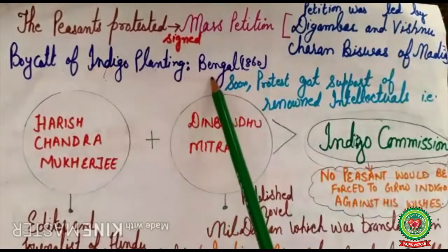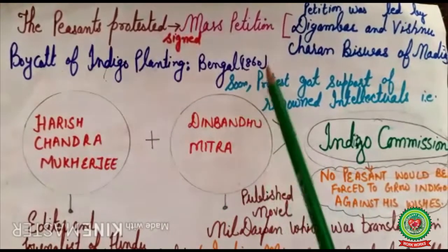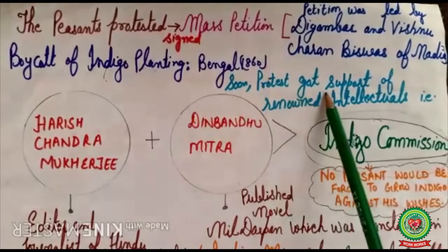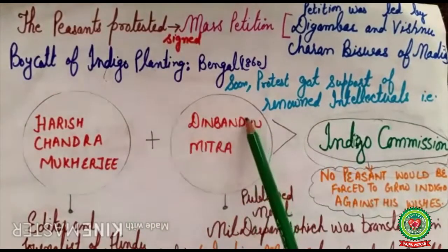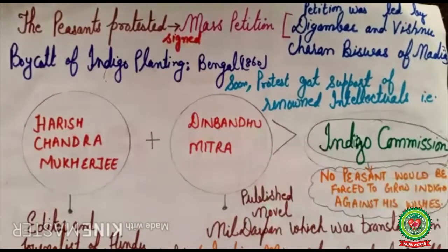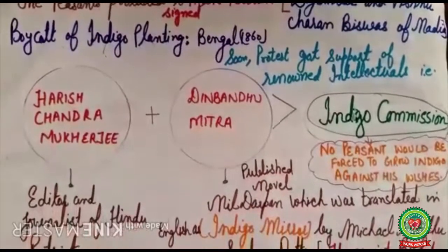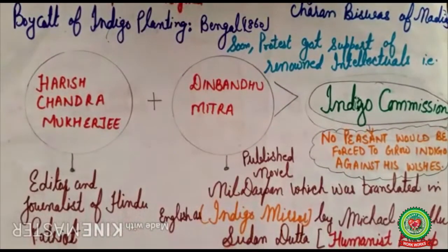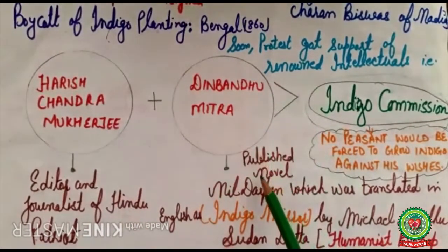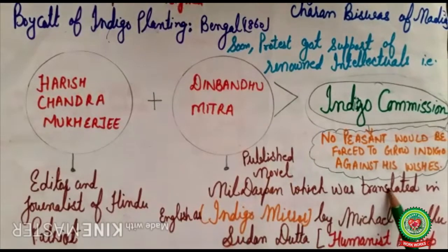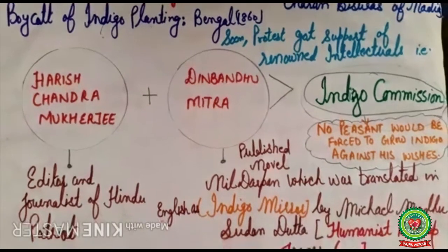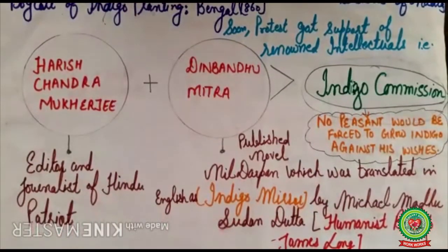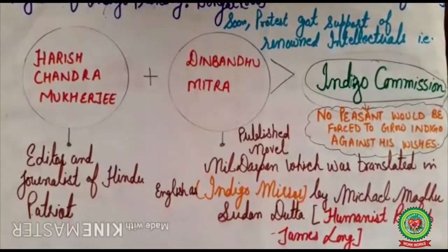The boycott of indigo planting was started in Bengal in 1860. Soon the protests got the support of renowned intellectuals like Harish Chandra Mukherjee and Deen Bandhu Mitra. Harish Chandra Mukherjee was the editor and journalist of the Hindu Patriot, a leading English newspaper. Deen Bandhu Mitra published a novel called Neel Darpan, which was translated into English as Indigo Mirror by Michael Madhu Sudhan Dutta, an Anglo-Indian, in the name of humanist Bishop Jean Sloan.